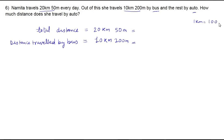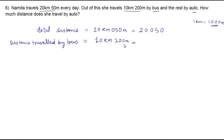The distance is given in two different units — kilometer and meter — so we need to convert into kilometers. We know that 1 kilometer equals 1000 meter, so there are three zeros, meaning three digits are used to represent the meter part. For 50 meter we only have two digits, so we add one zero to make it 050. Write the numbers in sequence: 20050 and 10200.